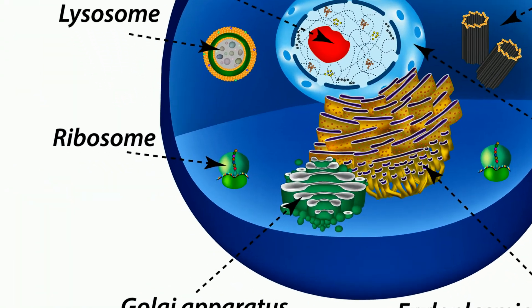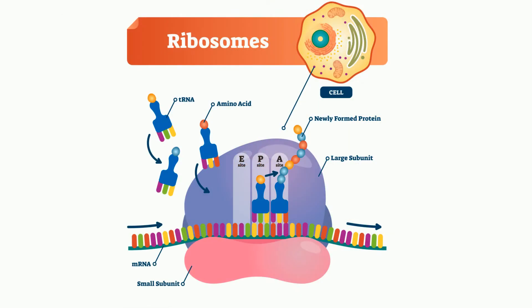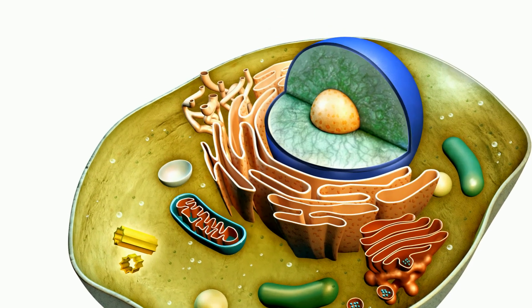These ribosomes are protein factories found throughout the cell. Ribosomes are composed of a large and small subunit, and each of these subunits contain their own ribosomal RNA.